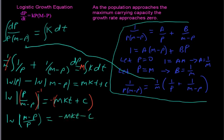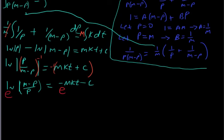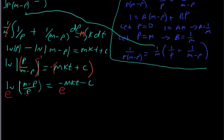Now we can exponentiate e to the power of both sides. And we end up with, I need a little more room here, m minus p over p equals e to the negative m kt. And I'm going to write this as times e to the negative c, right, using our exponent rules here.